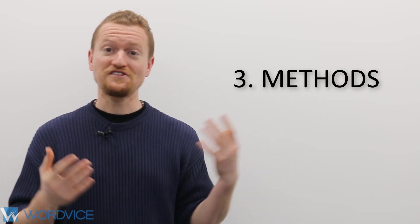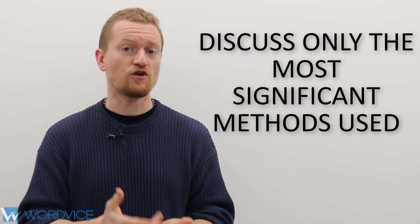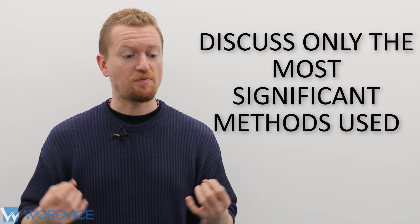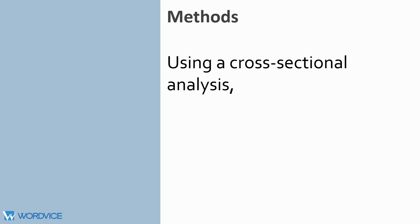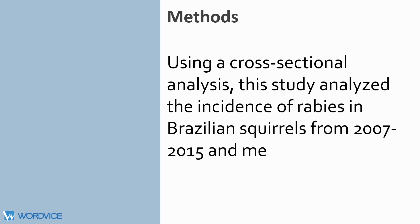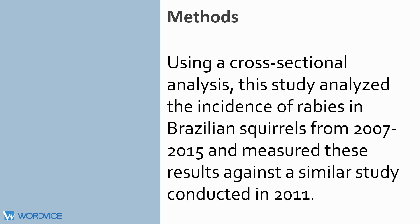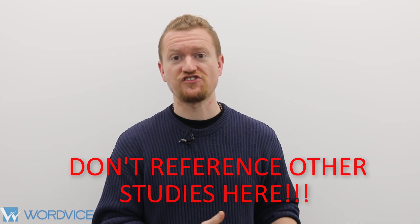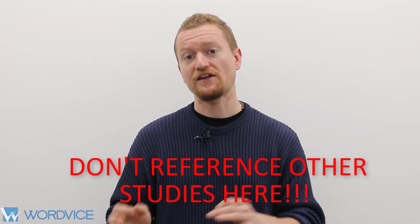Following your motivations and the problem, you need to talk about your methods. What did you do and how did you do it? Now you don't have a lot of space to talk about your methods here. So what you want to do is discuss only those methods that are most significant. Which parts are most important for readers to understand your results? Using a cross-sectional analysis, this study analyzed the incidence of rabies in Brazilian squirrels from 2007 to 2015 and measured these results against a similar study conducted in 2011. The language in this section deals directly with the research and analysis methodology. But as you can see, we've only focused on the most important parts of this methodology. Now in the methodology section, you want to be sure and not include any references to other works or studies. You can do that later in the introduction of your paper.